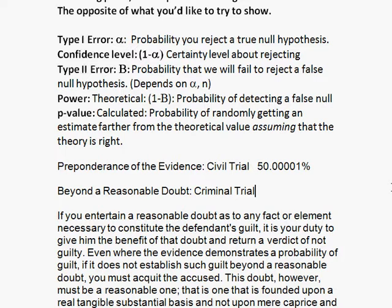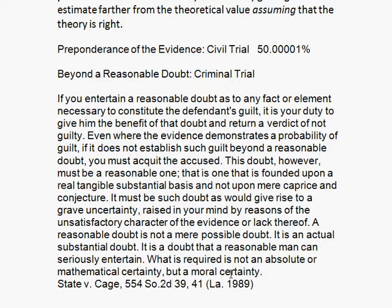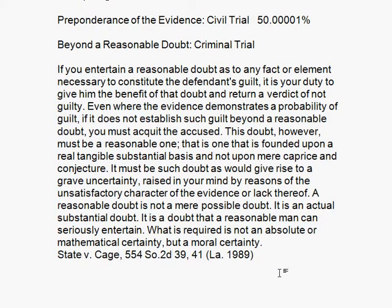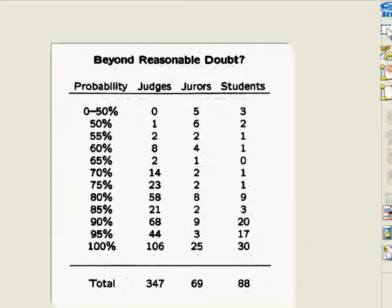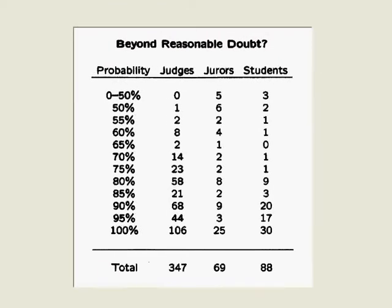In a criminal trial, it's not preponderance of the evidence — it's beyond a reasonable doubt. Here are some instructions from a 1989 case where the judge instructed the jury: if you entertain a reasonable doubt as to any fact or element necessary to constitute the defendant's guilt, it's your duty to give them the benefit of the doubt and return a verdict of not guilty. There is also a survey done of judges, jurors, and students about how certain you need to be about guilt before it goes beyond reasonable doubt.